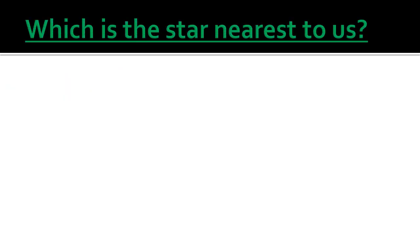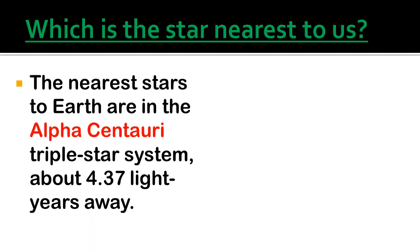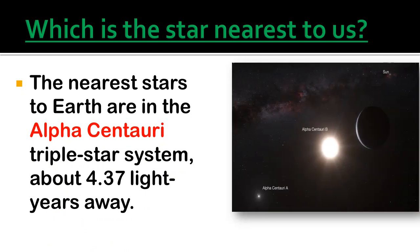Which is the star nearest to us? The nearest stars to Earth are in the Alpha Centauri triple star system, about 4.37 light years away. Alongside you can observe the image showing Earth, Alpha Centauri B as the nearest star, and the Sun.